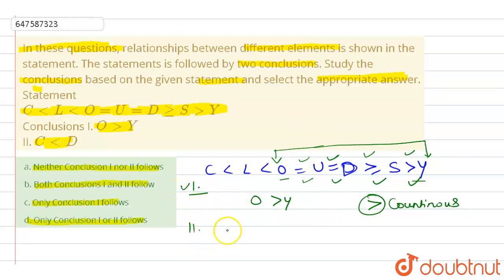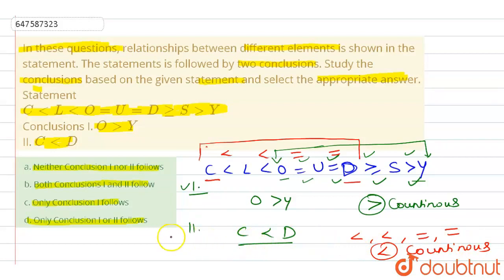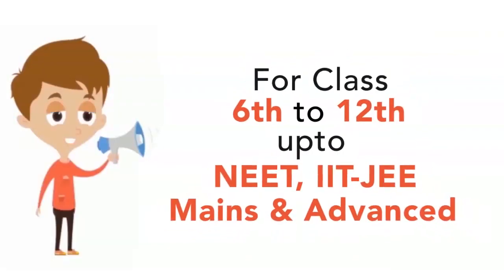Now we have to see C less than D. Now we can see where the statement has C and D. So we have this statement: C is less than L, L is less than O, O equals to U. So C less than D is correct. So option B, both conclusion one and two follows, is correct. This is our answer.